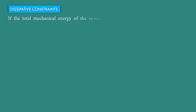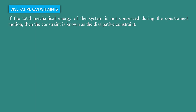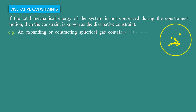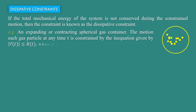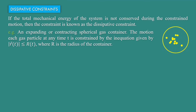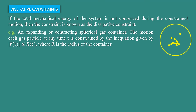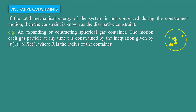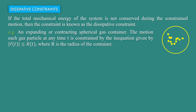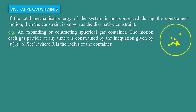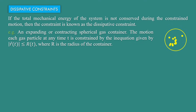Dissipative constraints: if the total mechanical energy of the system is not conserved during the constrained motion, then the constraint is known as a dissipative constraint. For example, an expanding or contracting spherical gas container — the motion of each gas particle at any time t is constrained by the inequality |r⃗| ≤ R(t), where R is the radius of the container.